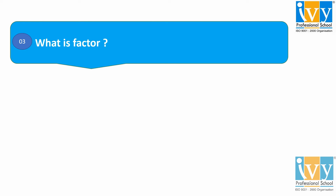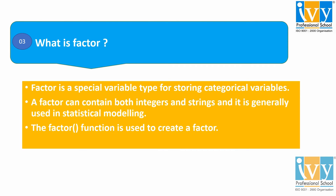Moving to our third question: what is a factor? A factor is a special type of variable that is used to store categorical variables. A factor can be both ordered and unordered, and it can contain both integers and strings. It is mainly used in statistical modeling and for plotting. The factor function is used to create a factor and is reserved for alphanumeric variables.